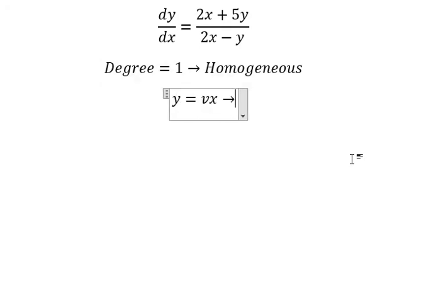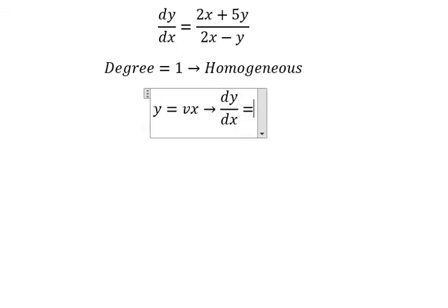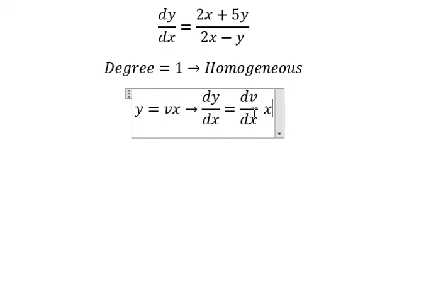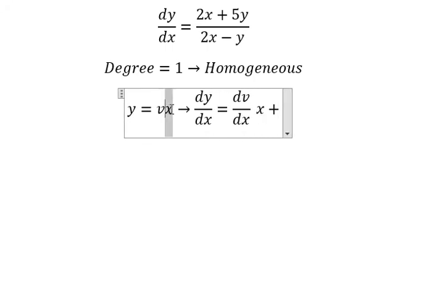If we do the first derivative for both sides, we have dy/dx equals to we do first derivative of v, so we have dv/dx multiplied by x, plus the first derivative of x, we have v.